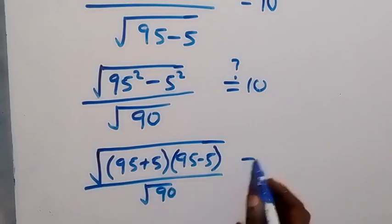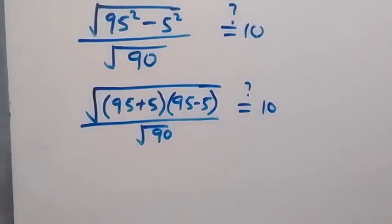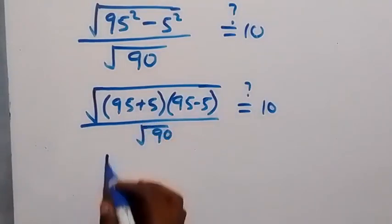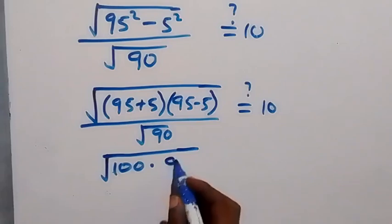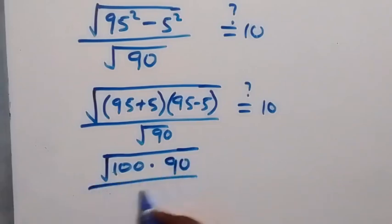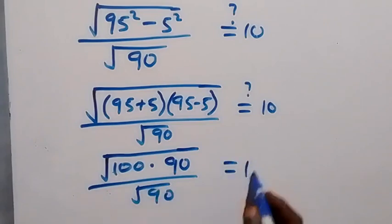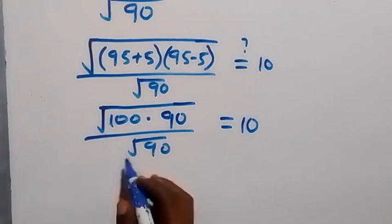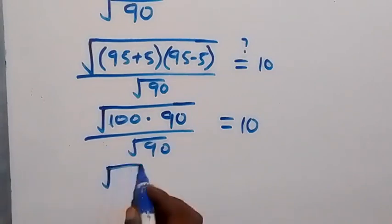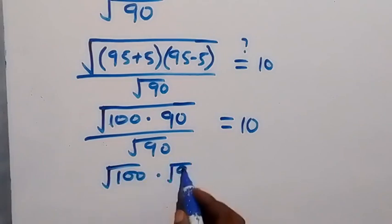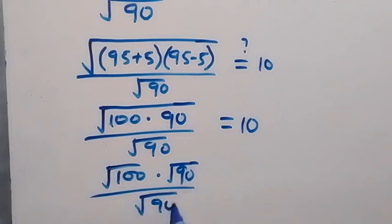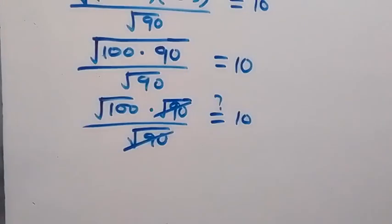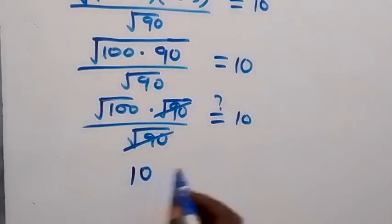So we have the square root of (100 times 90) over the square root of 90. Separating into two roots, this becomes root 100 times root 90, over root 90. The root 90 terms cancel each other, and root 100 is 10, which equals 10.